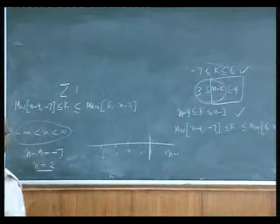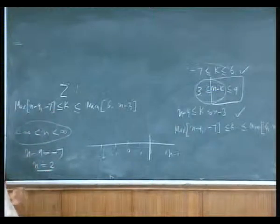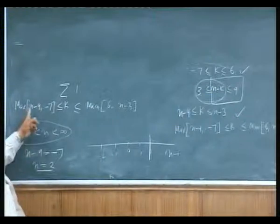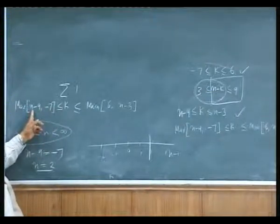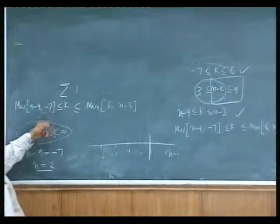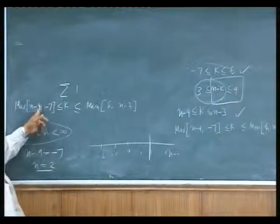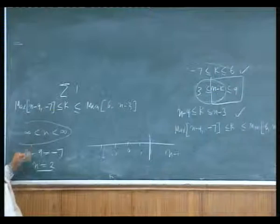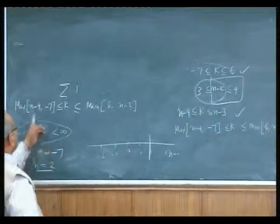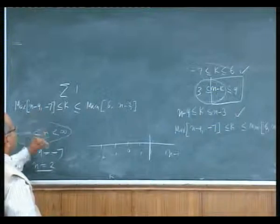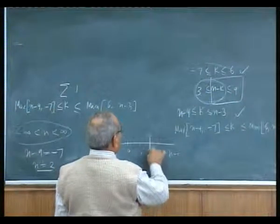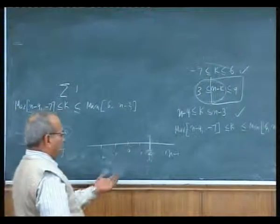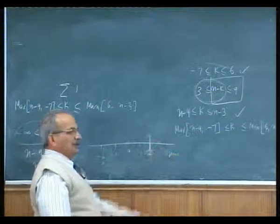Take a value of n less than 2, say minus 1. If n is minus 1, n minus 9 becomes minus 10 and the other term is minus 7, so minus 7 is the maximum. Take n equal to 0: 0 minus 9 is minus 9, so minus 7 is maximum. Take 1: n minus 9 is minus 8, so minus 7 is maximum. So when n varies from minus infinity to 2, minus 7 remains the maximum. After n equals 2, take 3: 3 minus 9 is minus 6, so n minus 9 becomes maximum. So n equals 2 is a boundary — before it one element is maximum, and after it the other is maximum.